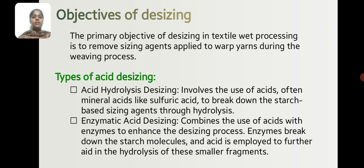Types of Acid Desizing. Acid Hydrolysis Desizing involves the use of acid, often a mineral acid like sulfuric acid, to break down a starch-based sizing agent through hydrolysis.